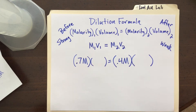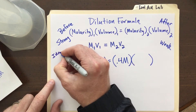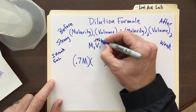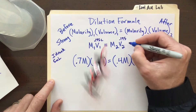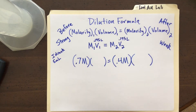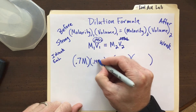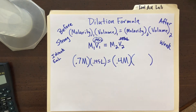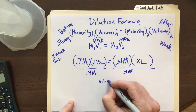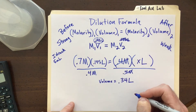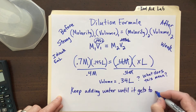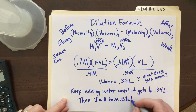We're taking the strong stuff, and we know we drank a little bit of it — about 5 milliliters — so instead of 200 milliliters we're down to 195 milliliters, which is about 0.195 liters. Note: I put 0.195 liters on the left side, not the right, because the right-side volume is what I'm solving for — how much volume of the new diluted solution can I make? Plugging in the values and solving, I get a final volume of 0.34 liters. That means I need to keep adding water until the solution reaches 0.34 liters.